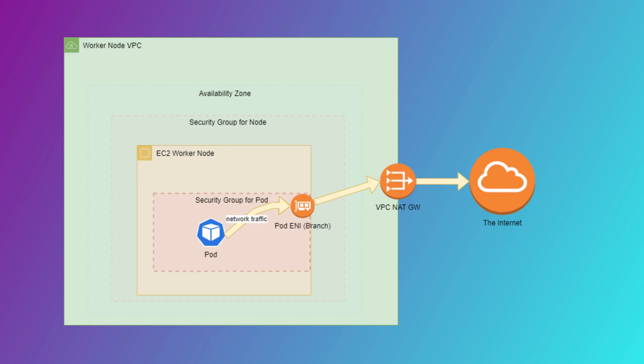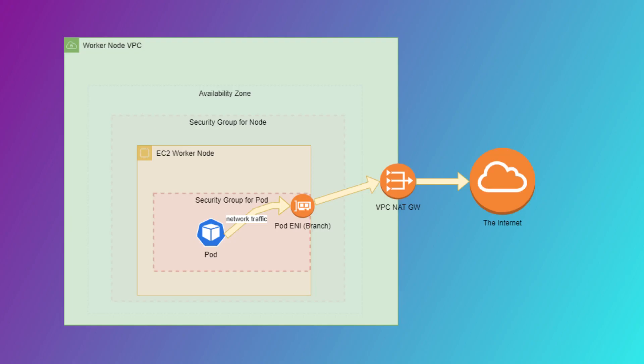Here's how it works: when you deploy a security group to a pod, AWS has provisioned a controller that automatically attaches a secondary ENI to the node where the pod is scheduled. That ENI is of type trunk. A branch interface is then attached to that trunk, and the branch interface gets attached to the pod. Once the security group is attached to the branch interface, the pod gets an IP address, and that's where the security group is also associated.